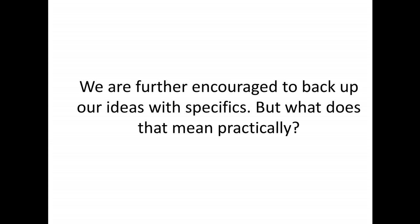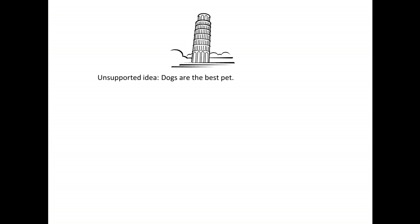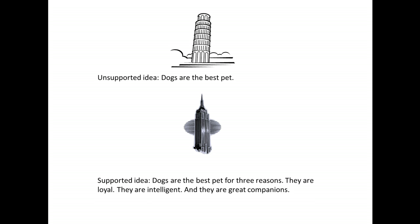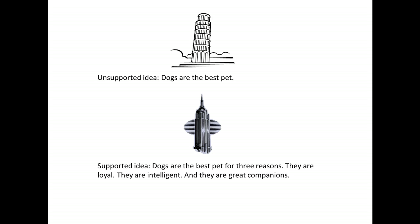We are further encouraged to back up our ideas with specifics. Here we have an unsupported idea: 'Dogs are the best pet.' Now here's a supported version: 'Dogs are the best pet for three reasons. They are loyal. They are intelligent. And they are great companions.' You see the difference — any claim you make in a research paper must be supported.